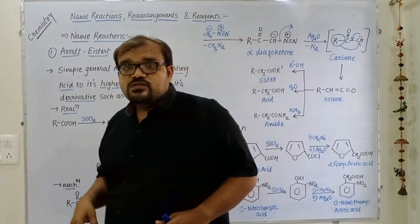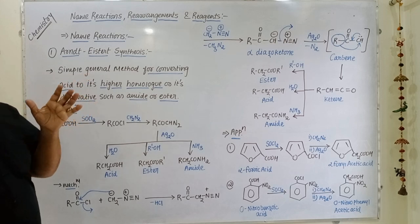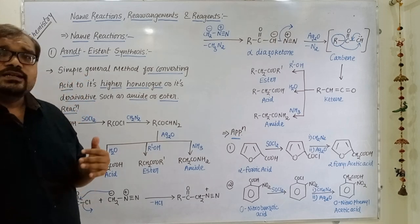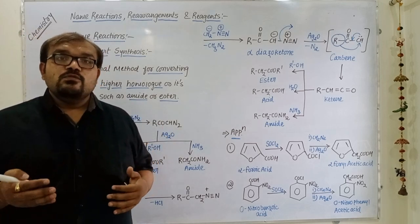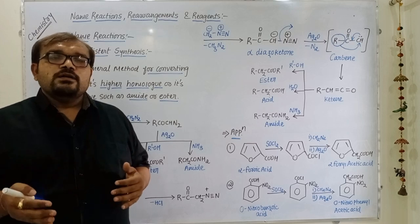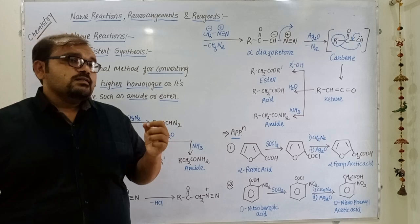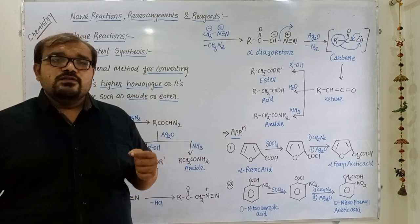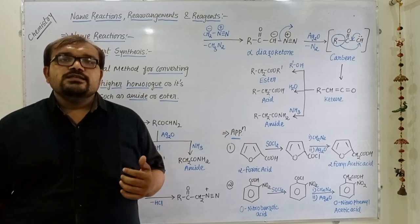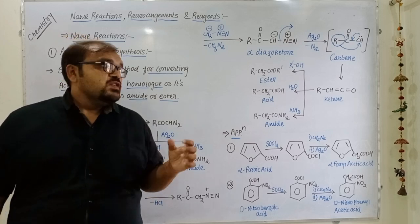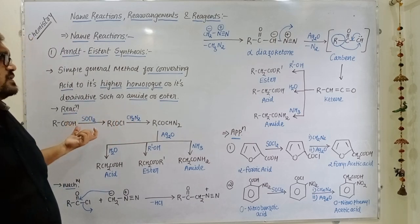Arndt-Eistert synthesis is a simple general method to convert an acid into its higher homologue — that is, a product containing one more carbon compared to the reactant or starting material. It is also a method to convert acid into its derivatives such as ester or amide.